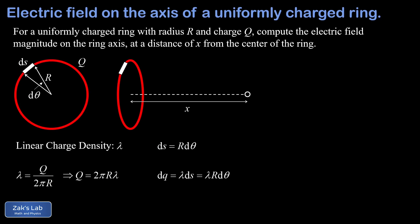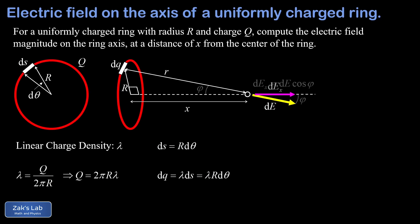Next we diagram the electric field contribution made by dq. We can visualize a right triangle: one leg is R, the radius of the ring, and the other leg is x, the distance from the center of the ring to the observation point. Little r is the distance from dq to the observation point, and dE points radially away from dq. Since the off-axis components of E cancel by symmetry, we're only concerned with the projection of dE onto the symmetry axis, which we call dE_x. Labeling the angle as phi, dE_x equals dE times cos(phi).